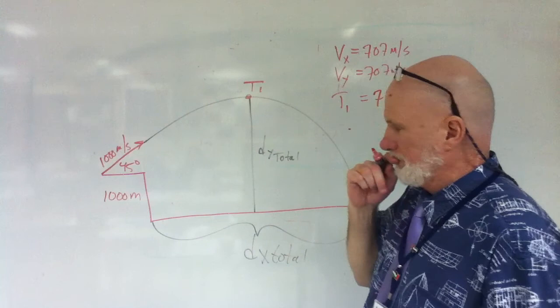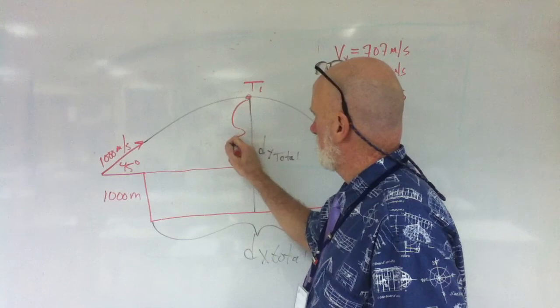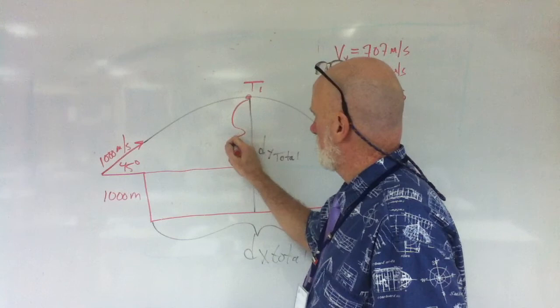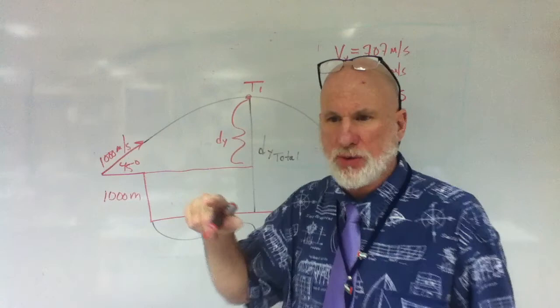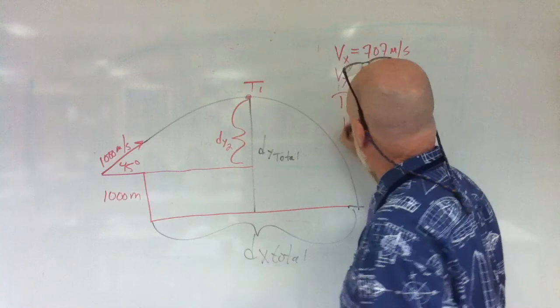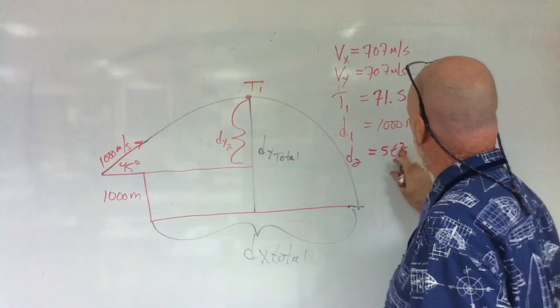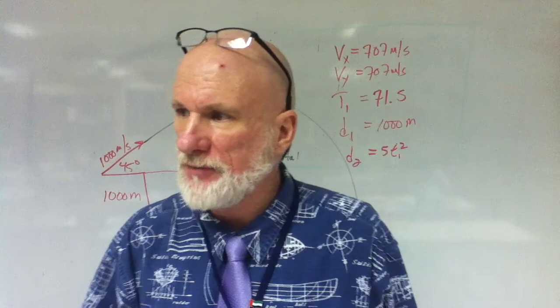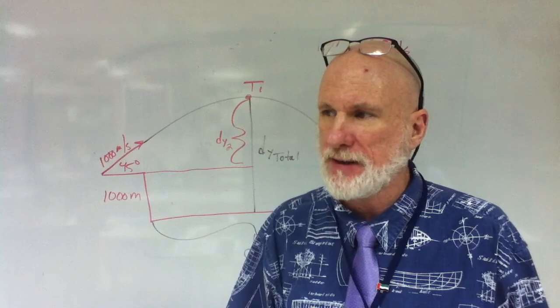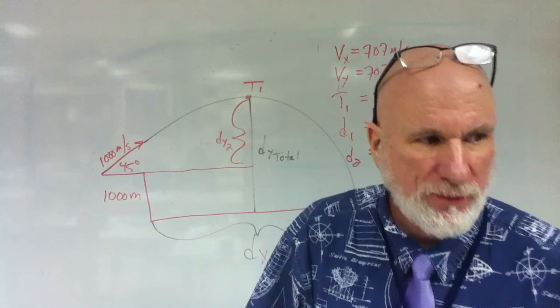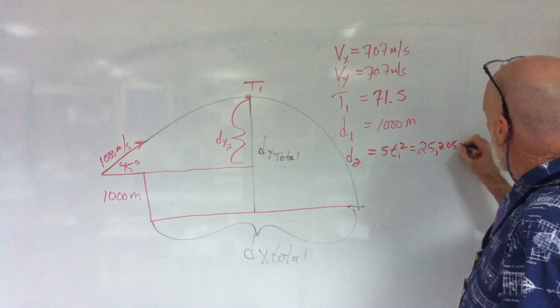So, now, how high is this? This is going to be dy. What is that, dy1 or dy2 according to your map? dy2. Okay. dy2, we know dy1. dy1 is 1,000 meters. dy2 is going to be 5t squared, 5t1, right? Yes? So, what is 5 times 71 squared? 5 times 71 squared. Help me out here. 25,205. 25,205 meters.